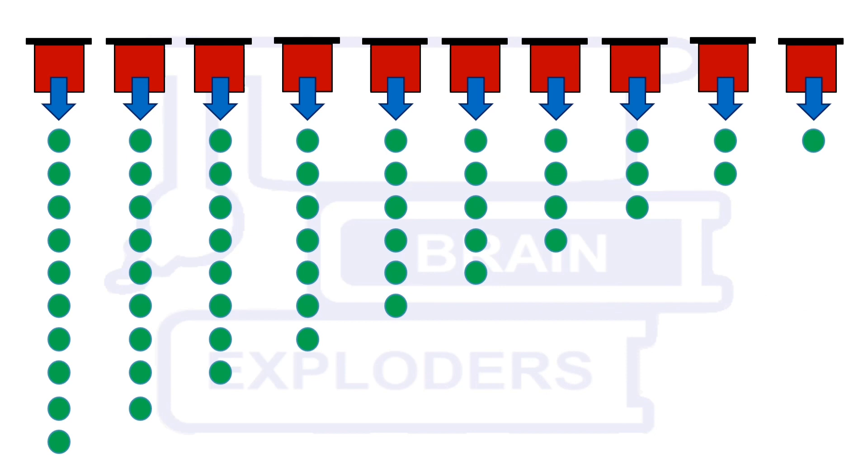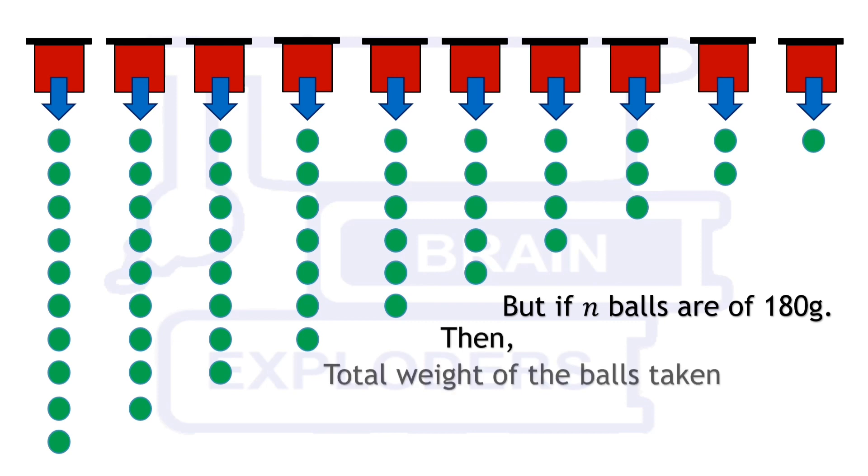But we know that one of the boxes contains balls of 180 grams. Suppose from these 55 balls, n number of balls are of weight 180 grams. Hence, for every ball of lighter weight, our data will give an error of 20 grams. Since here are n balls of 180 grams, the total weight of the balls taken here should be 11,000 minus 20n grams.